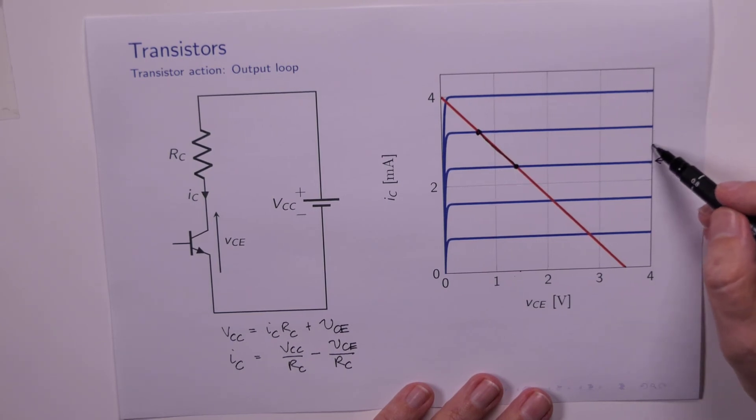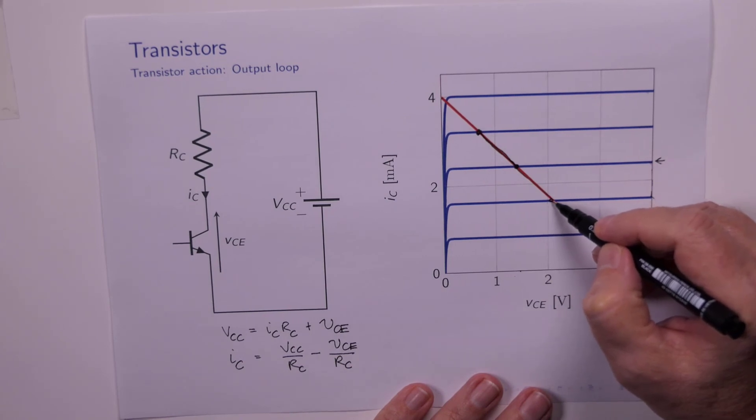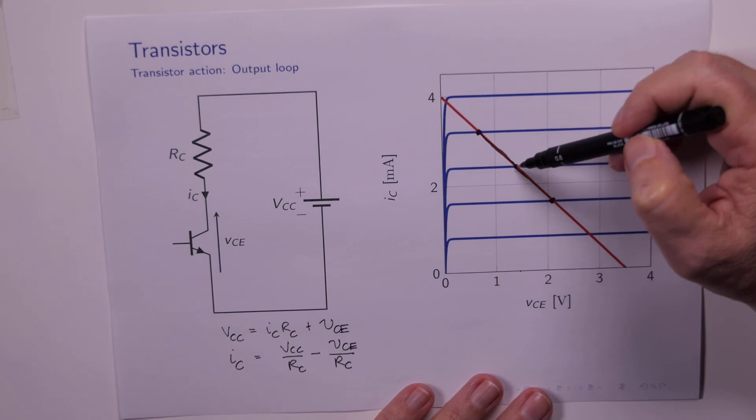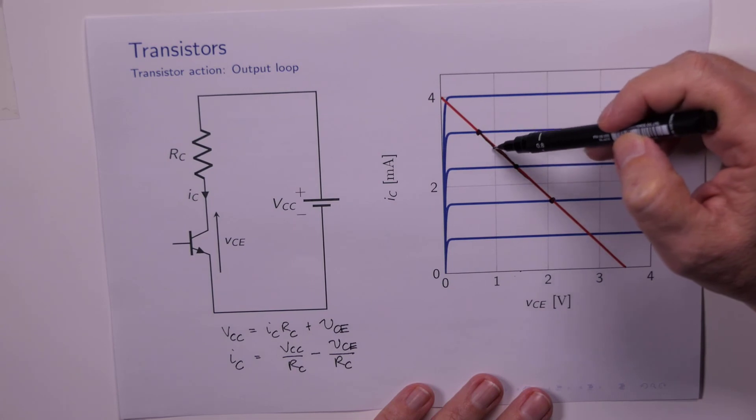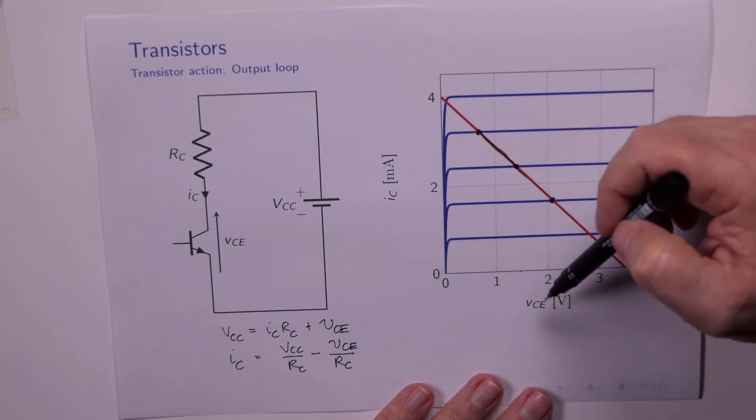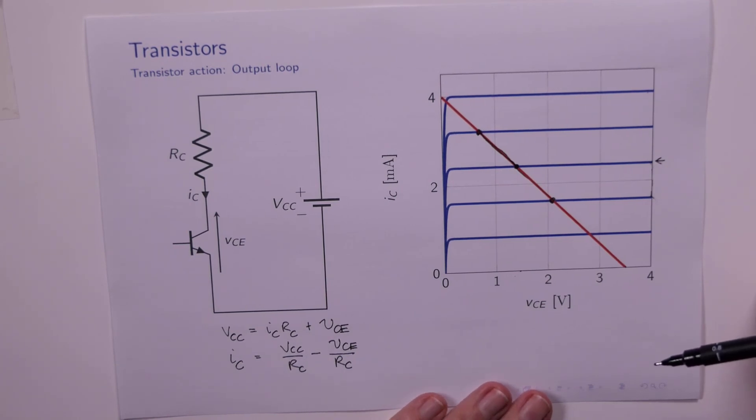And then maybe when we hit minus 500 millivolts for VIN, the base current ends up coming down to here, then we would move from that part of the curve down to this part of the curve. And so you can see that as VIN goes up and down, IB goes up and down, and therefore our operating point, the specific pair IC and VCE, moves up and down this curve. So that's how the device works.